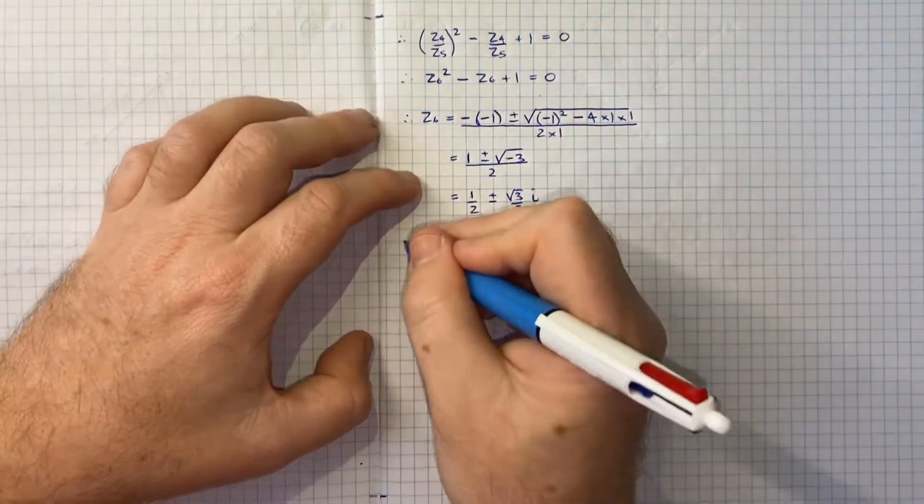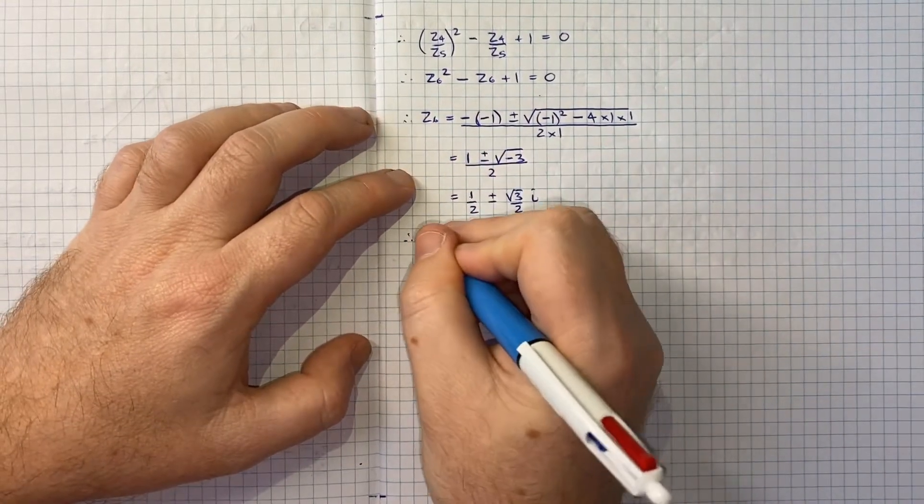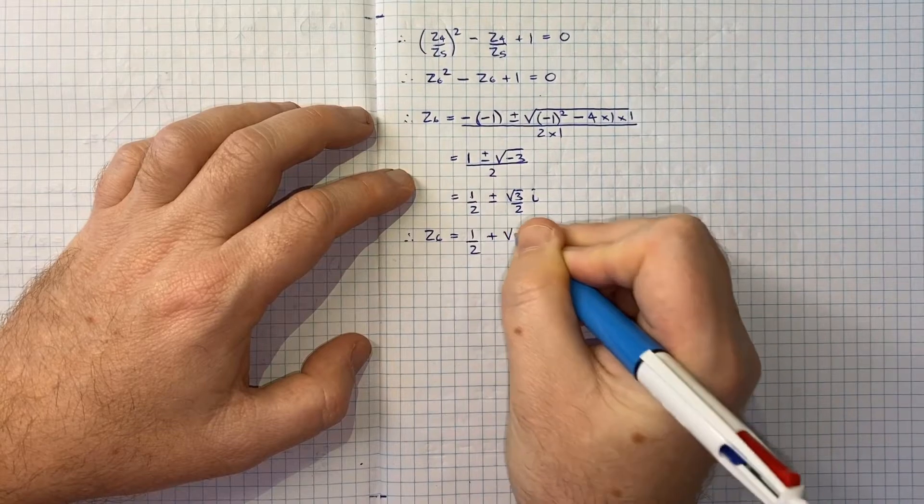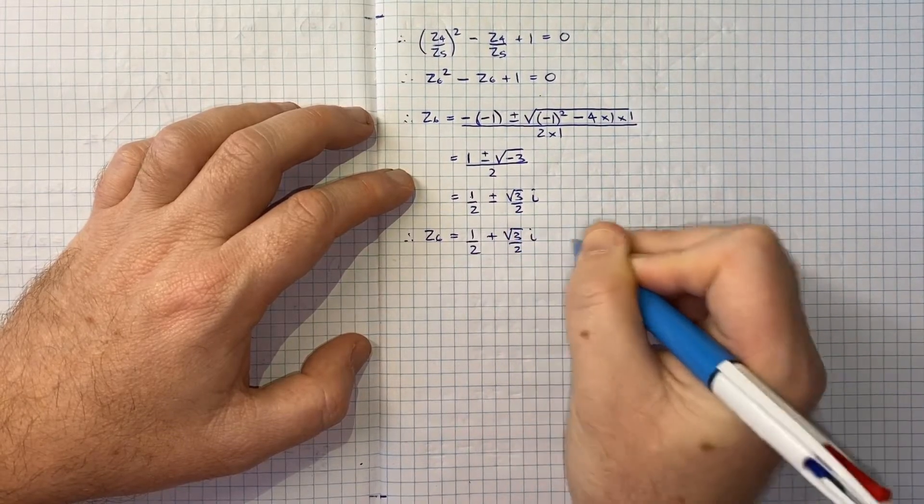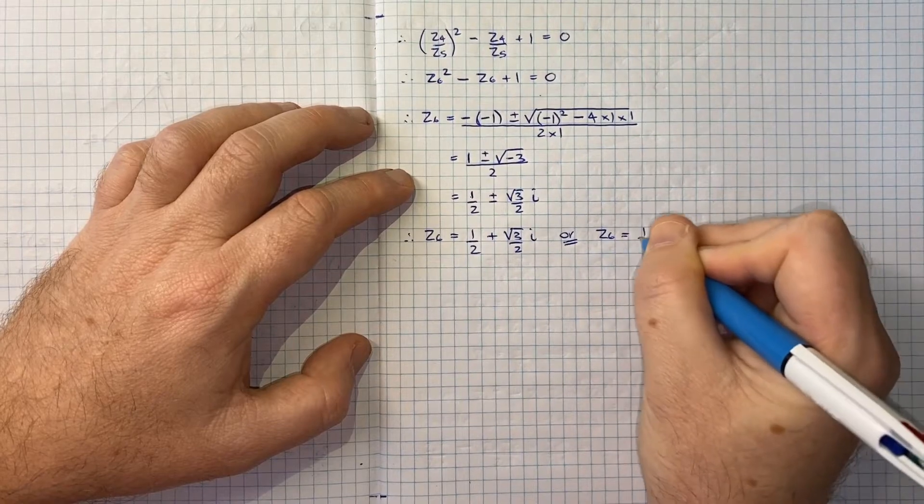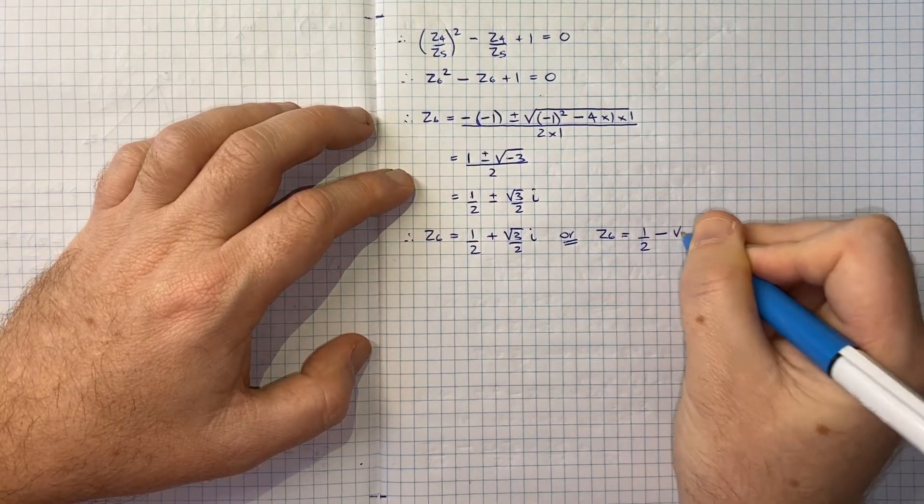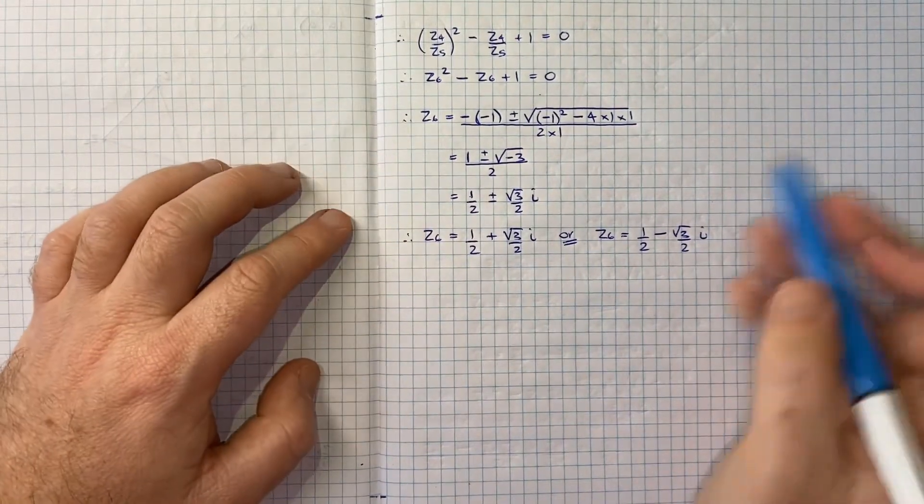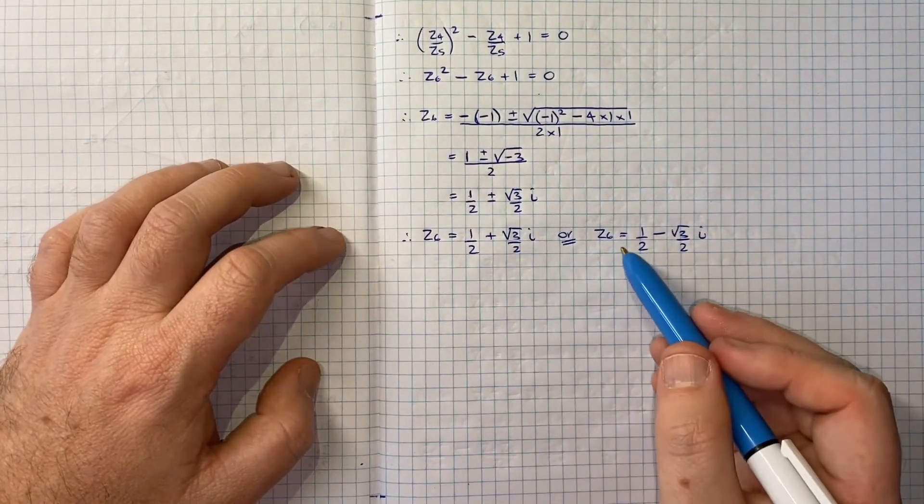If we get this into our complex number form, we'll have 1 over 2 plus or minus root 3 over 2i. So really we've got two versions of Z6: Z6 equals a half plus root 3 over 2i, or Z6 equals a half minus root 3 over 2i. And the question is which one of these is relevant for us?